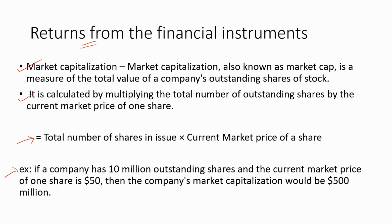For example, if a company has 10 million outstanding shares and the current market price of one share is $50, then the company's market capitalization would be $500 million. Total shares in issue, 10 million, multiplied by market value of one share, $50, equals $500 million — this is the market capitalization, or the valuation of the company based on the current market price.